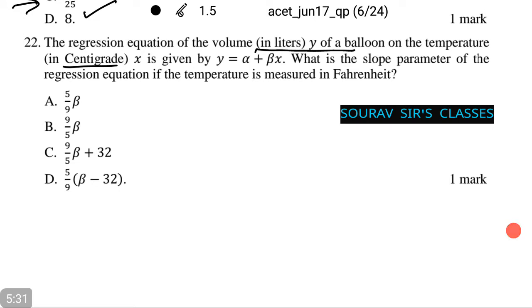Let me tell you a little tip. To change from degree centigrade to degree Fahrenheit, the multiplying factor is 9 by 5. Also, note that beta equals rho s y by s x. Thus, the transformation does not change rho or s y, but only changes s x by the multiplying factor of 9 by 5. Hence, the answer will be 5 by 9 beta, which is option number A.